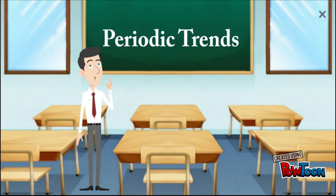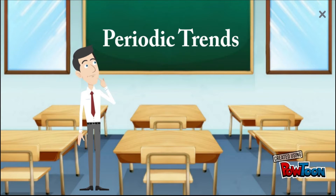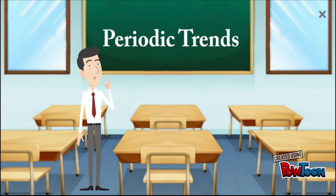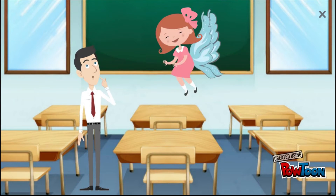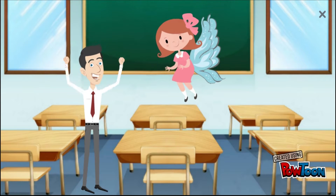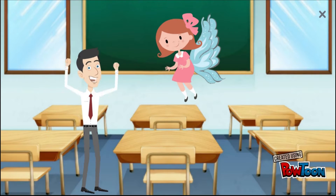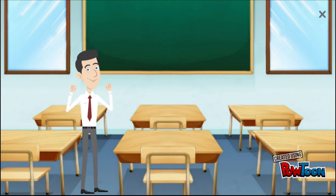But I wonder why the elements are organized in this way. Is there any other trend beyond how periods contain the same number of principal energy levels, or that groups are elements with the same number of valence electrons? If only I could figure out if there were other trends. Hi there, I'm Ellen Lee the Chemistry Fairy and I can help you! Come with me!